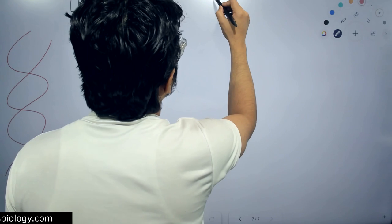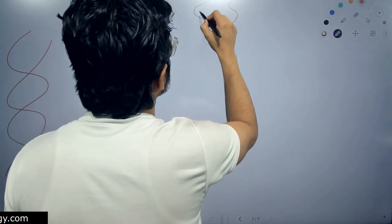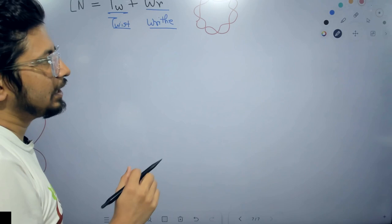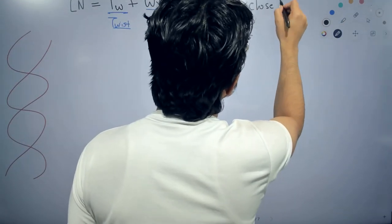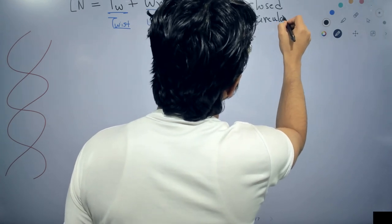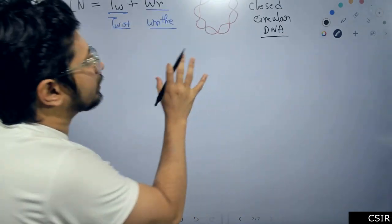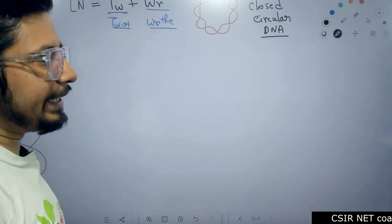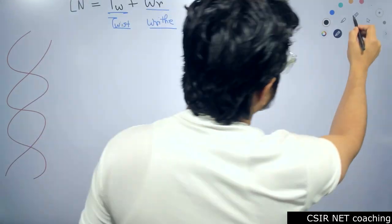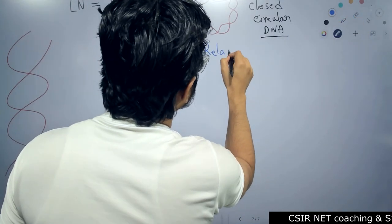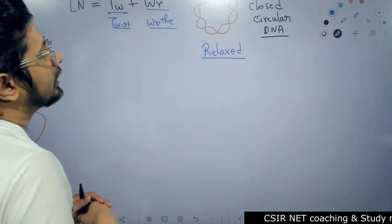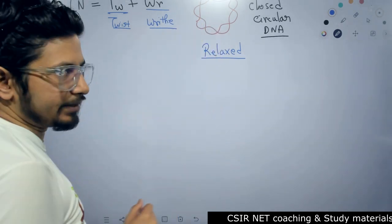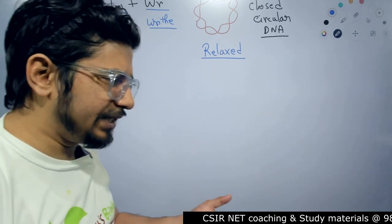In very simple words, we can draw it as a closed circular DNA. In a closed circular DNA, this circular DNA can be present in a relaxed state — normally it is present in a relaxed state. In the relaxed state, we can count the number of times one strand of the DNA crosses over the other strand. That is known as the number of turns, and that is basically known as the twist number.